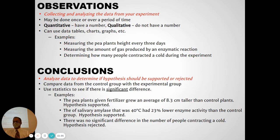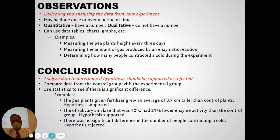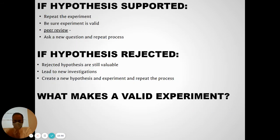For example, if the pea plants given fertilizer grew an average of 8.3 centimeters taller than the control plants, I would say my hypothesis was supported — that fertilizer does help pea plants grow taller. Or if the enzyme had lower activity when heated to 40 degrees. Or there could be no difference — people given vitamin C got colds just as much as the others, so the hypothesis was rejected. Any of those are possible results of your experiment.